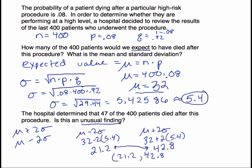If the hospital determined that 47 patients did not survive, we would call that unusual. That's outside the usual range. That is an unusual finding. I needed to find the range in order to answer that question, and to find the range, I needed to calculate the mean and the standard deviation.